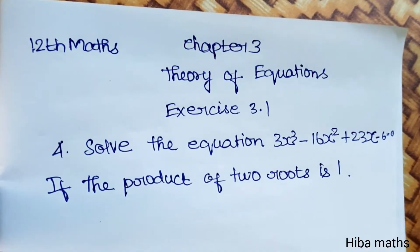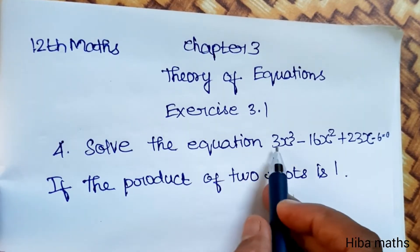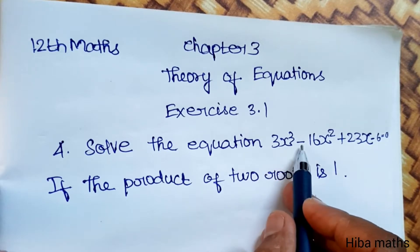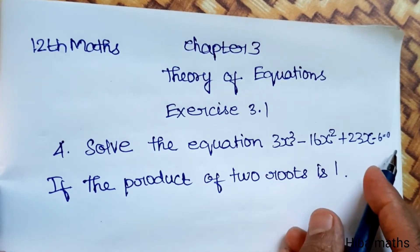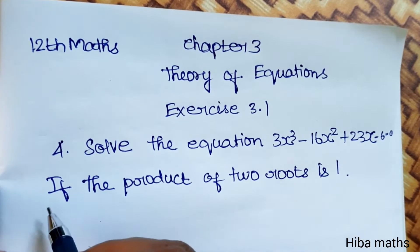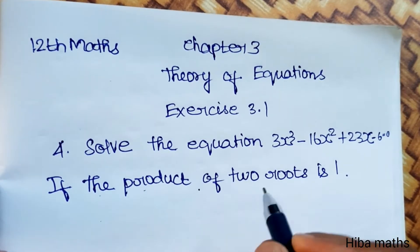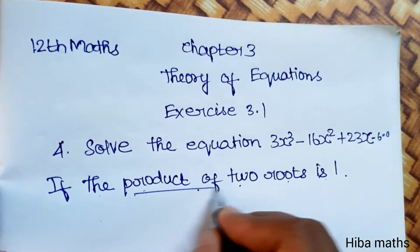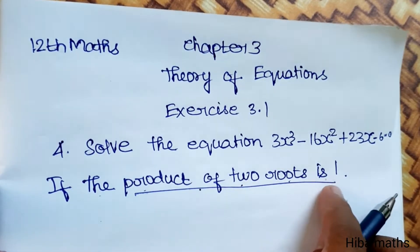Hello students, welcome to Hiba Max 12th standard math, Chapter 3: Theory of Equations. Exercise 3.1, 4th question: Solve the equation 3x³ - 16x² + 23x - 6 = 0, given that the product of 2 roots is 1.